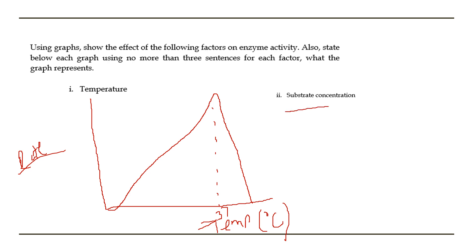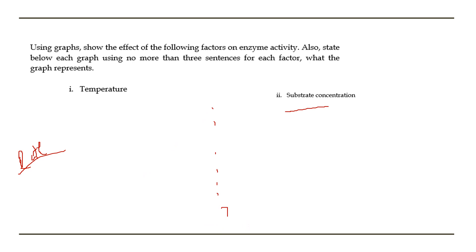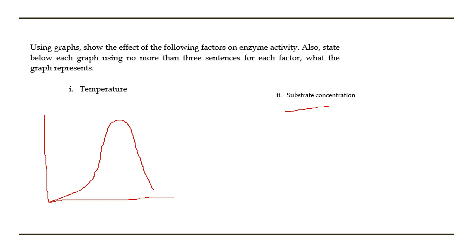There's also a graph to draw for substrate concentration. For temperature we have that curve going up to an optimum and dropping. Notice with temperature, as the temperature starts to peak up even from zero, the rate of reaction starts to increase and the optimum is usually around 37 degrees. Some enzymes work at 30 degrees — it totally depends, but you can just label it as 'optimum temperature.' Remember to label your axes: rate of reaction on the y-axis and temperature on the x-axis.